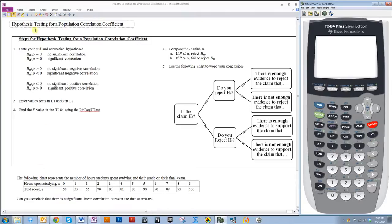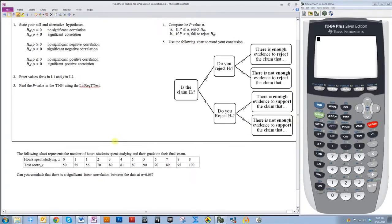Let's use the following example to perform a hypothesis test for population correlation coefficient. So, the following chart represents the number of hours students spent studying and their grades on the final exam. So the studying is x and test score is y. Can you conclude that there is a significant linear correlation between the data at alpha equals 0.05?